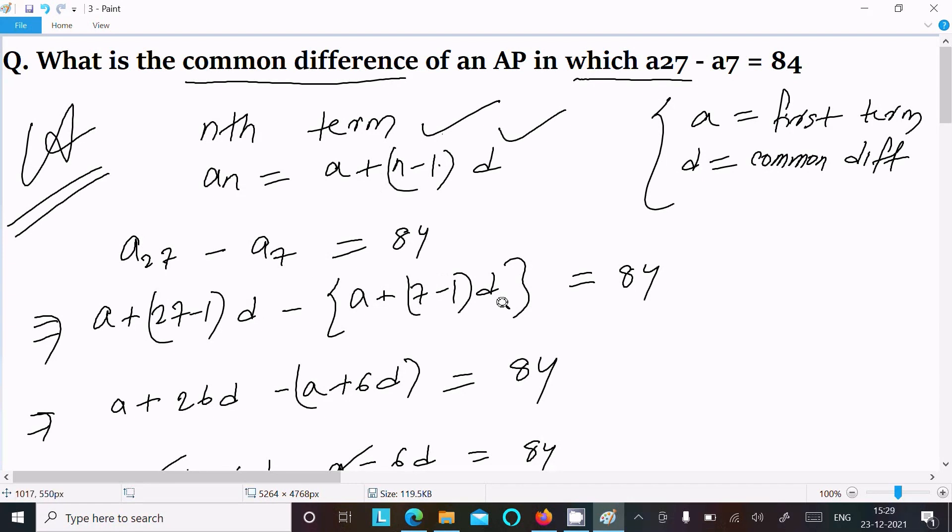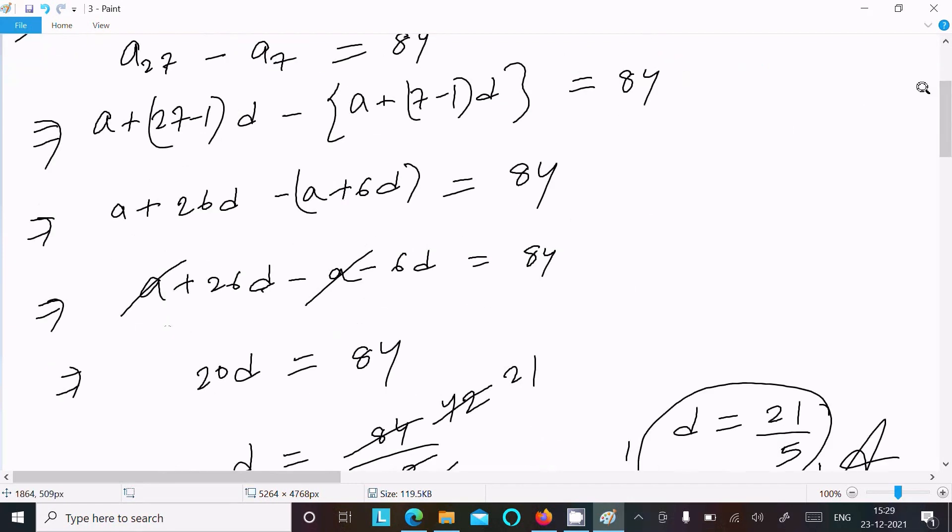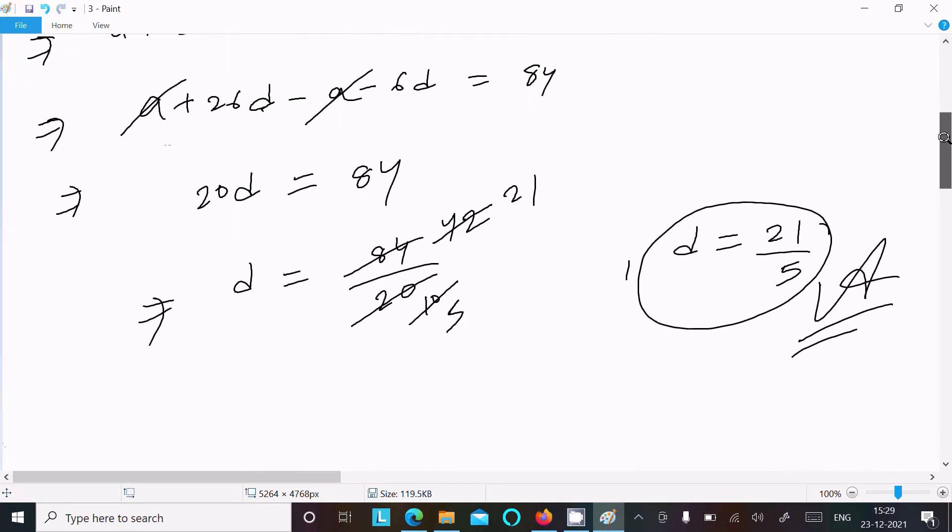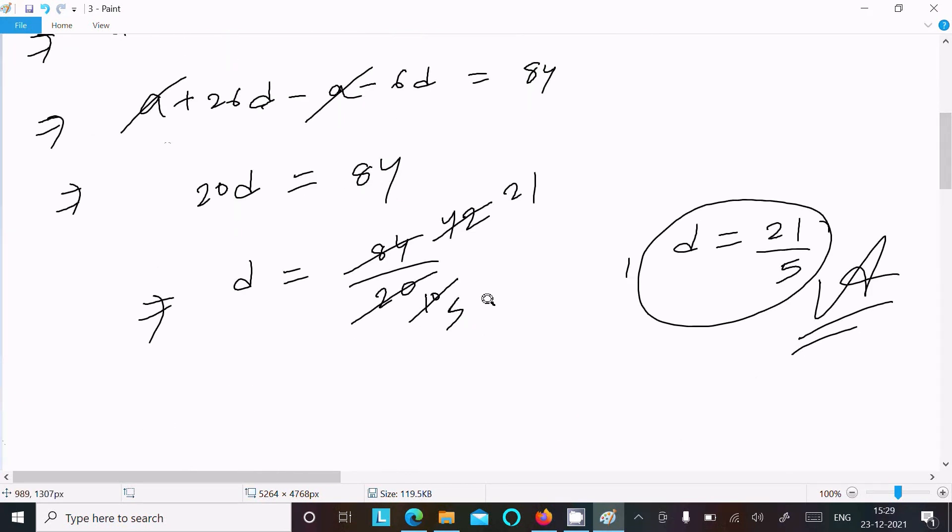Use this formula. After that, calculate, multiply, then a cancels. Subtract to get 20d equals 84. So d is now 84 by 20. If you cancel, then you can get 21 by 5.